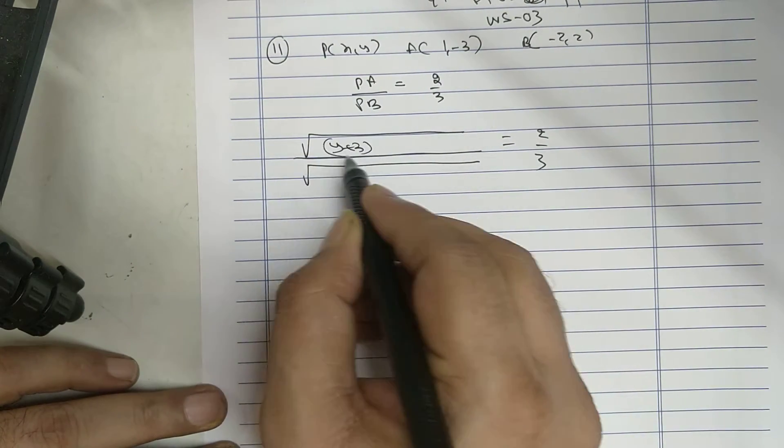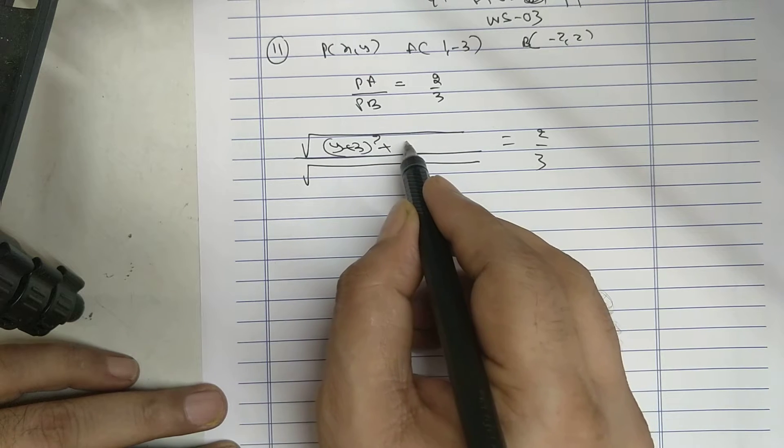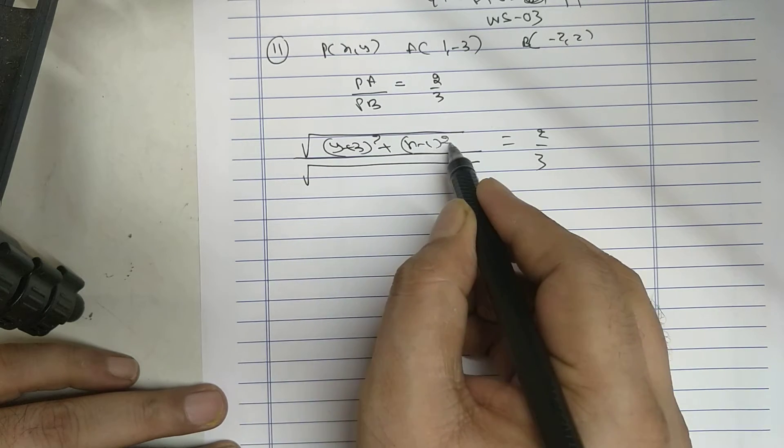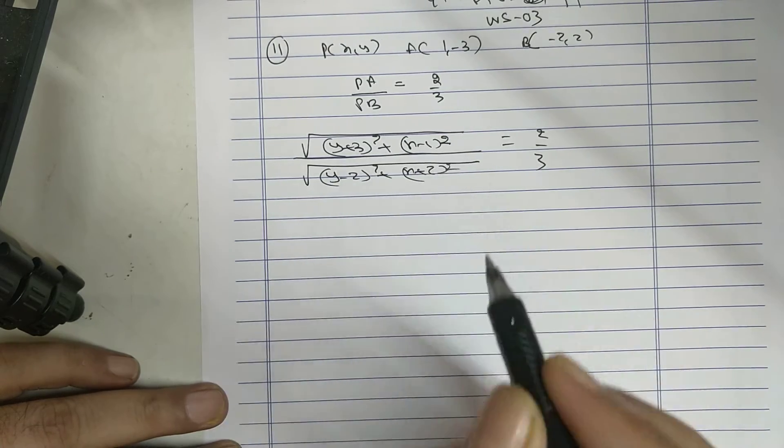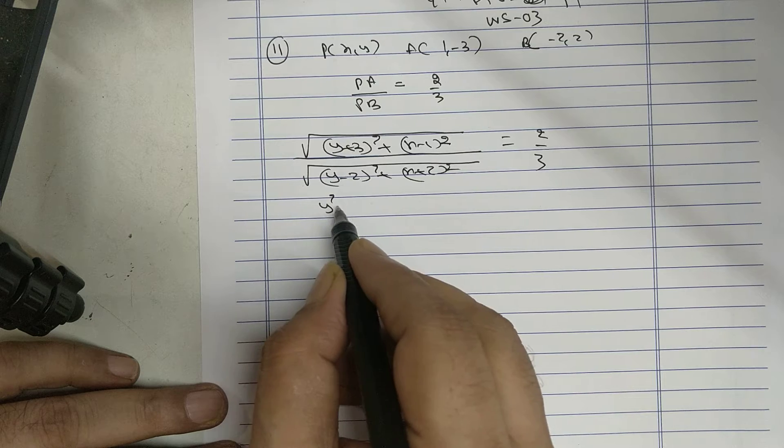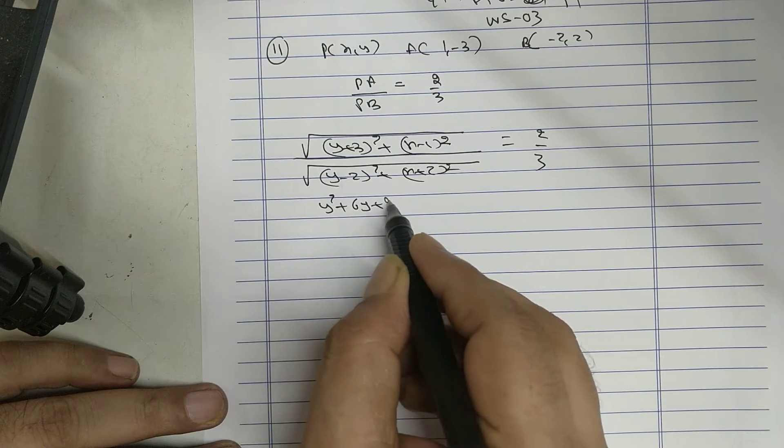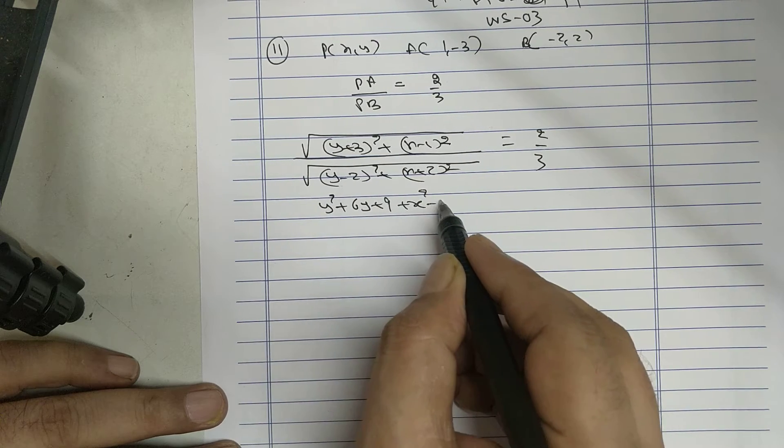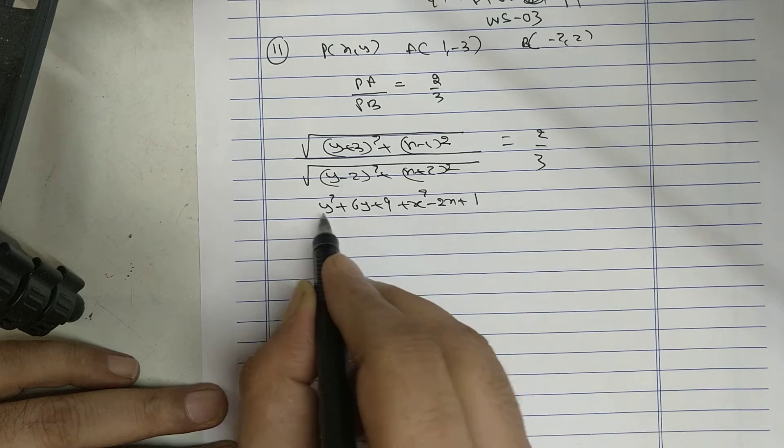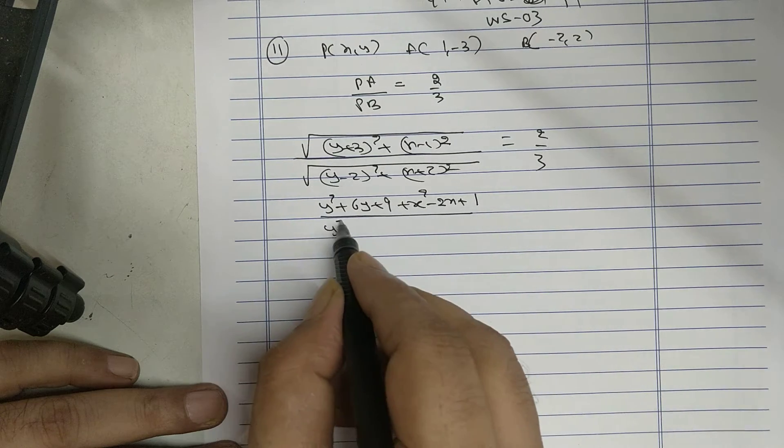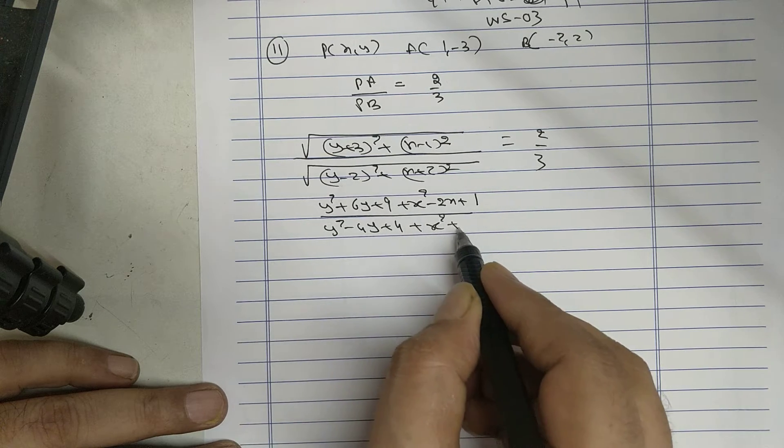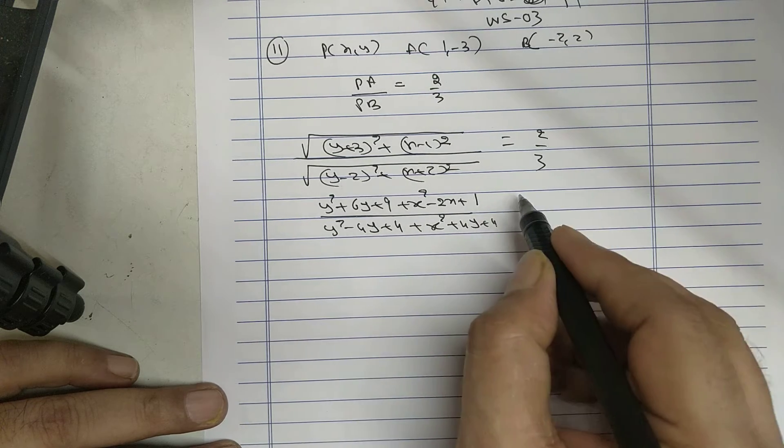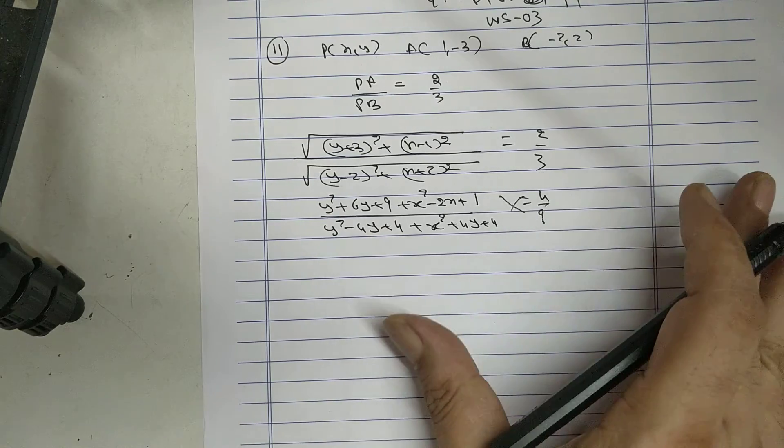Y plus 3 whole square, X minus 1 whole square, Y minus 2 whole square, X plus 2 whole square. Squaring both sides: Y square plus 6Y plus 9, X square minus 2X plus 1, Y square minus 4Y plus 4, X square plus 4X plus 4, equal to 4 upon 9. The cross multiplication.